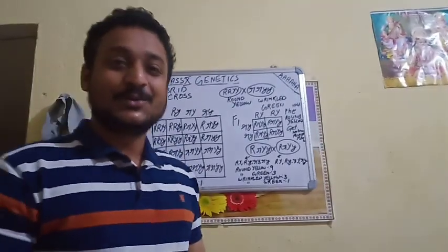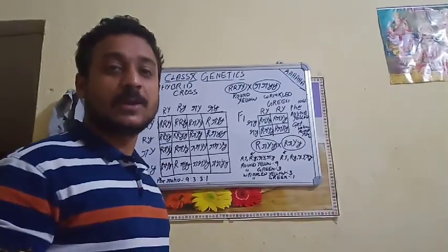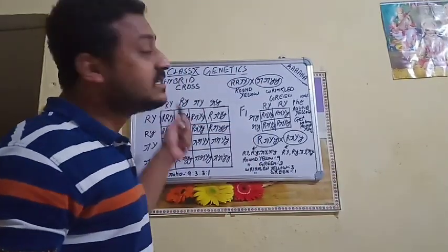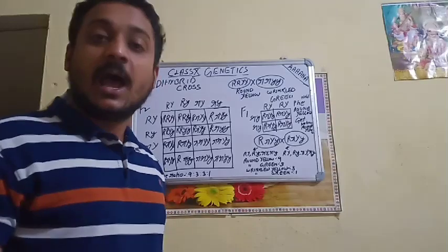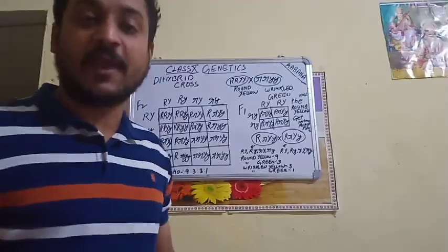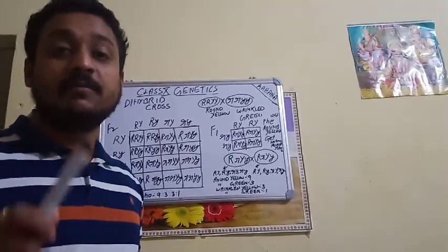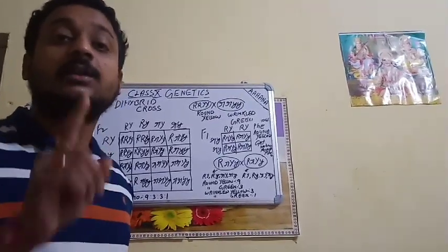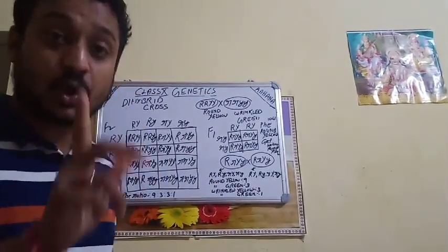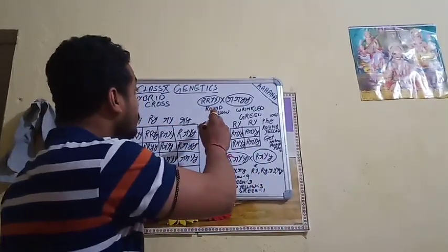Today we have started the dihybrid cross. As we all know, for Class 10 standard we have started the chapter genetics. In our previous class we have seen about monohybrid cross and about Mendel's law. Today we will see dihybrid cross, and we will look at how the law of independent assortment given by Mendel is verified.